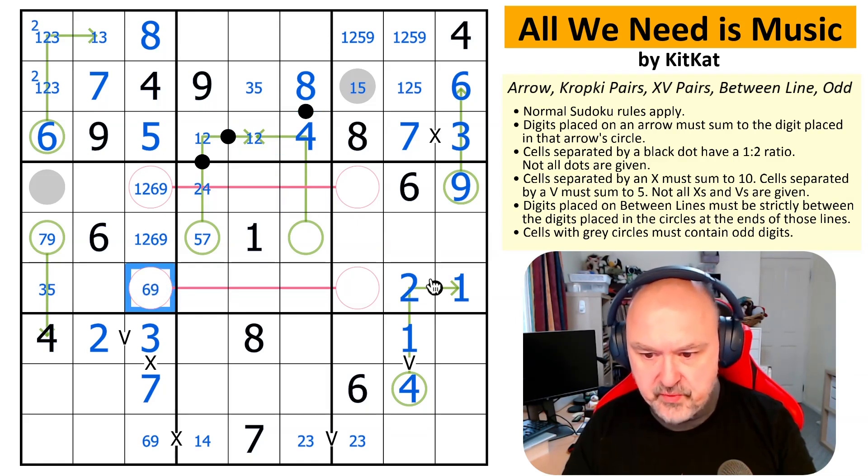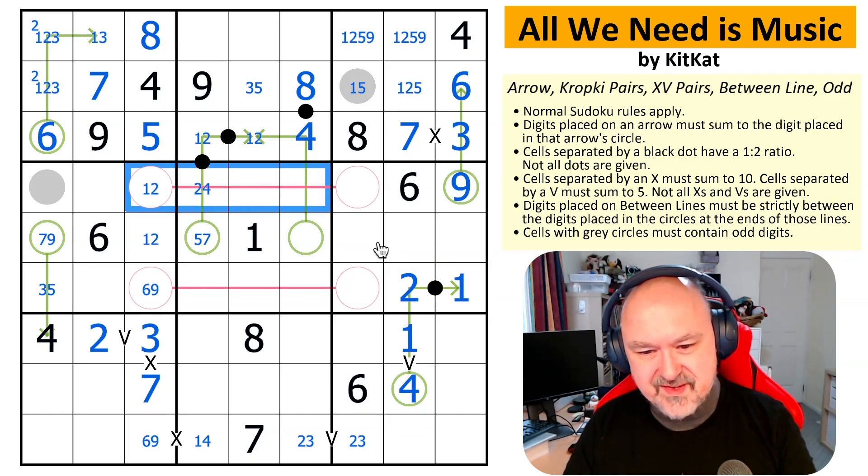This is not 1 or 2 because of the 1, 2 over here. So this is a 6, 9 pair. I take 6, 9 out of here. This becomes 1 or 2. Now, if this is 2, 4, this could still go up. I've still got room, I think. Although, oh no, this could be a 7. 2, 3, 4, 5, 6. Yeah, I've got options.